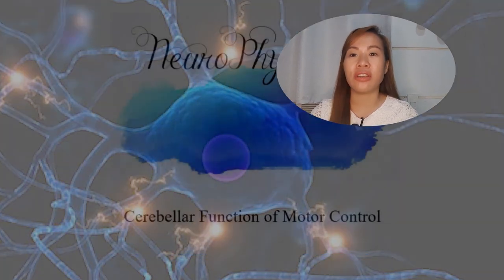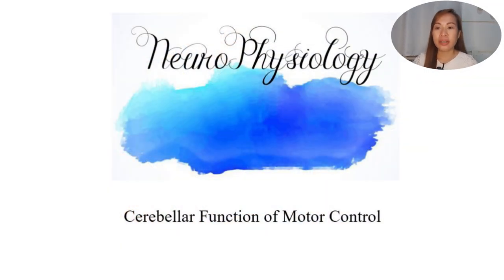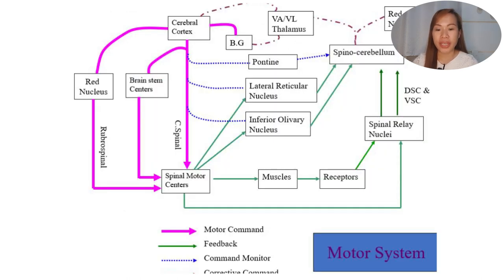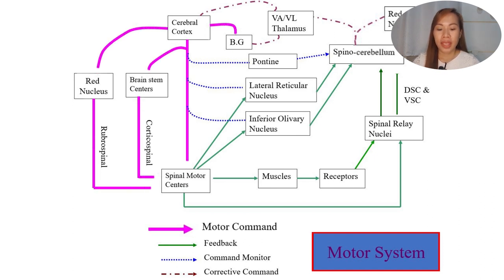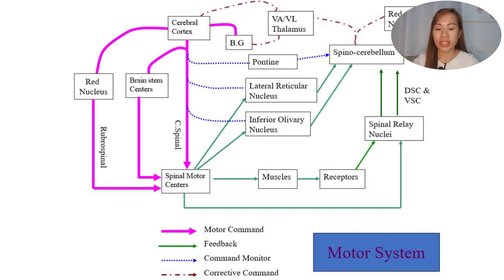Hello everyone and welcome back to another lecture video on neurophysiology. Tonight we're going to talk about cerebellar function of motor control. Looking back on previous lectures, we have the motor system showing us the cerebral cortex and the motor command it gives to the spinal motor centers, which then innervates our muscles. There is also a feedback mechanism and different command monitors represented by blue dotted lines, as well as a corrective motor command — and here we can see the cerebellum.